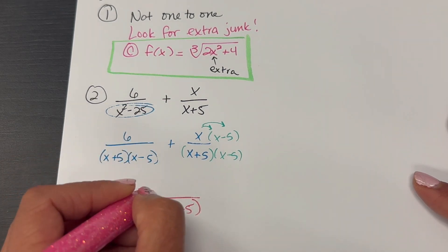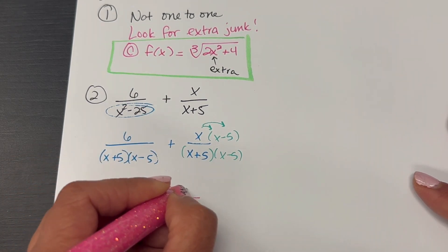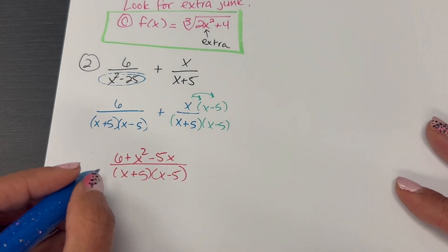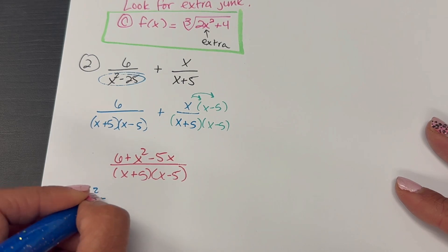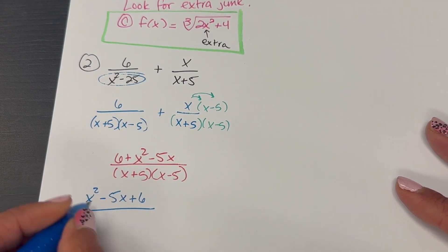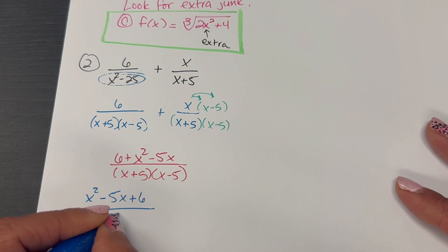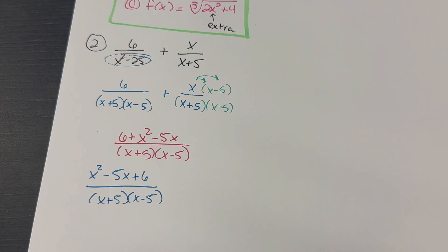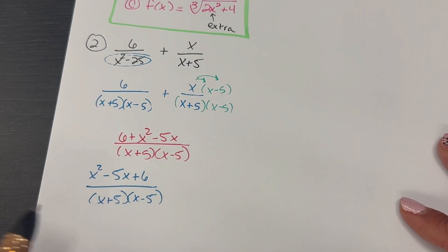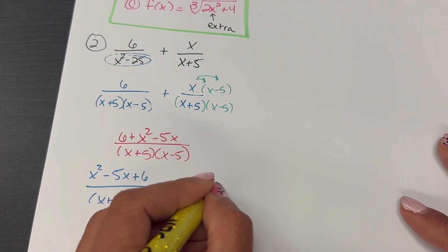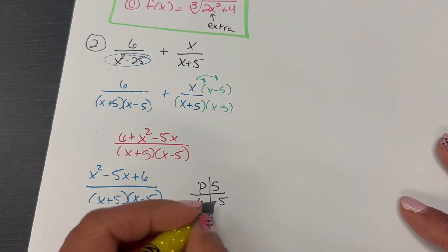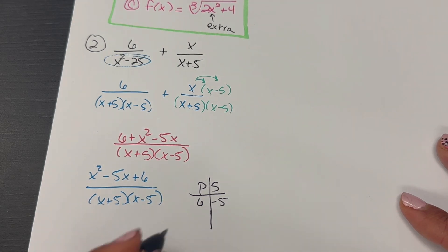The numerator will be 6 plus X squared minus 5X. That's not in standard form, so I'll write it as X squared minus 5X plus 6, over X plus 5, X minus 5. This might be my answer, but I need to double check that nothing else will cancel, so I need to product sum out the numerator. The product is 6 and the sum is negative 5.